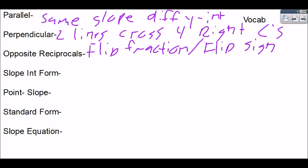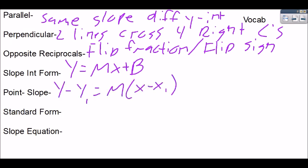Slope intercept form was y equals mx plus b. Point-slope was when we knew one point and the slope but didn't know the y intercept. Standard was an easy way for us to find the x and y intercept. The two rules were that a had to be positive and no fractions.